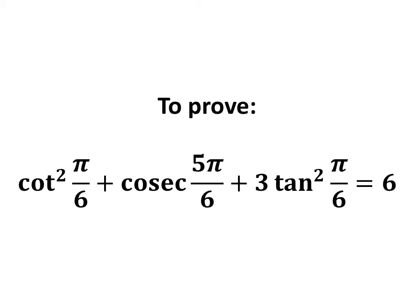In this video, we will learn to prove the equation: square of cotangent of π/6 plus cosecant of 5π/6 plus 3 times square of tangent of π/6 is equal to 6.